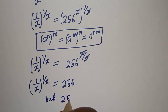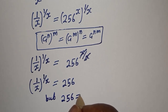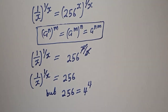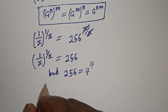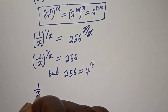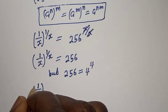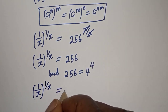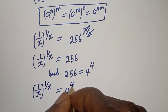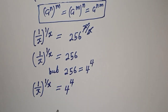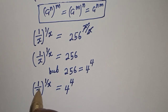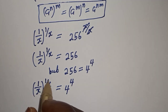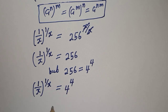But 256 is equal to 4 raised to power 4. So 1 over s to the power of 1 over s is equal to 4 raised to power 4. Looking at this, the base 1 over s is equal to 4 and the exponent 1 over s is equal to 4.